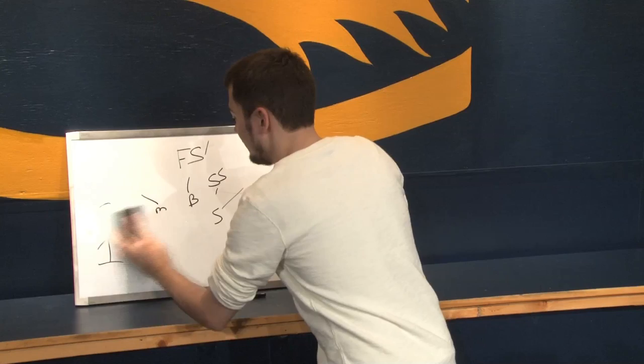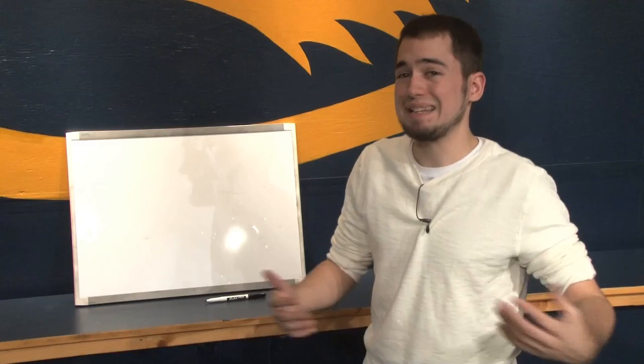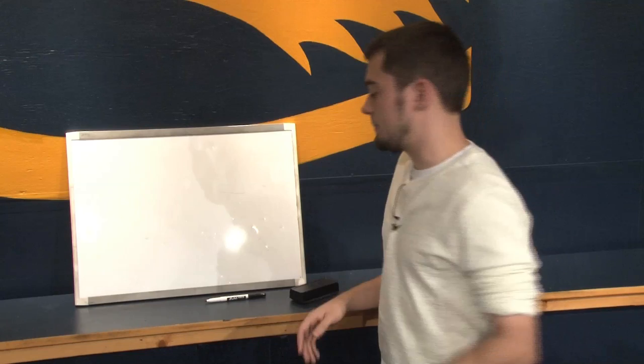That's the basics of cover one — man coverage on the outside. Shading: I've seen different ways in terms of inside versus outside shade. I've always thought they use an inside shade in cover one to kind of force the receiver to the boundary and use the sideline as help, but I've heard different opinions on that as well.